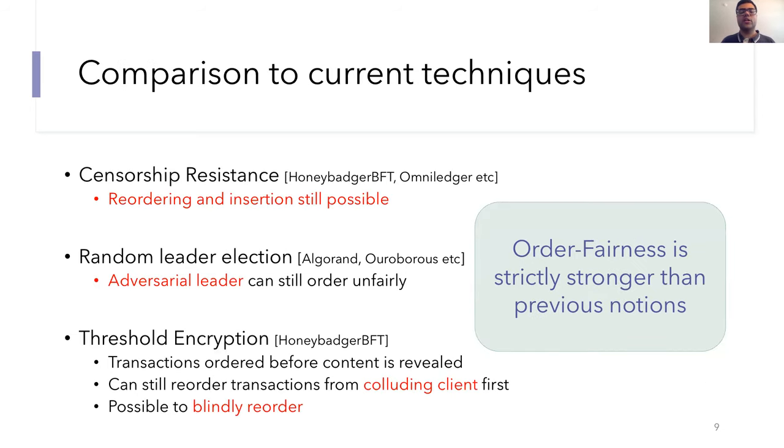So just to put order fairness in the context of current techniques, I'll briefly compare to related notions, but see our paper for the full comparison. Usually there's a couple of different techniques in which ordering can be manipulated by a node. So a malicious node can censor transactions or insert its own or try to reorder transactions in general. There's several protocols that provide the so-called censorship resistance property. This informally means that any honest user transaction will eventually make its way into the log. So censorship resistance is a great first step, but it doesn't really prevent any form of insertion or reordering attacks.